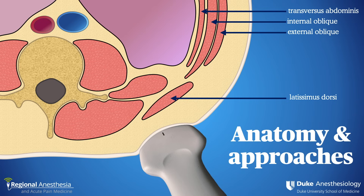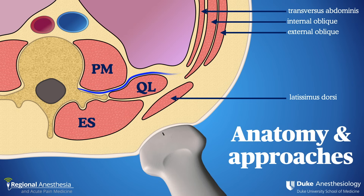In this cross-section of the abdominal wall, we see the transversus abdominis muscle, the internal and external oblique muscles, and the latissimus dorsi muscle superficially. Adjacent to the vertebra, we find the erector spinae muscle posteriorly, the psoas major muscle tucked in beside the vertebral body, and the QL muscle extending laterally from the tip of the transverse process. The ventral rami of the lower thoracic nerves travel between the psoas and QL, then across the anterior surface of QL before jumping into the TAP plane.